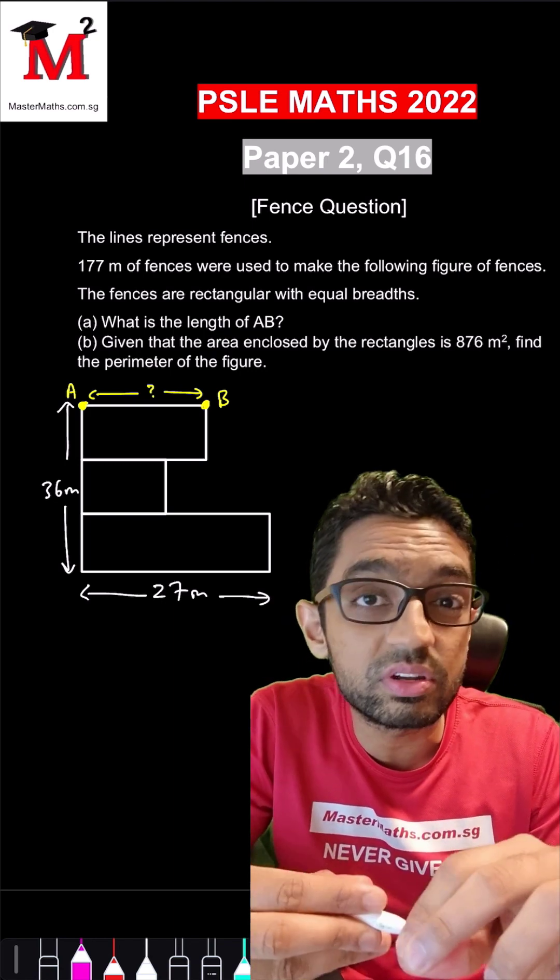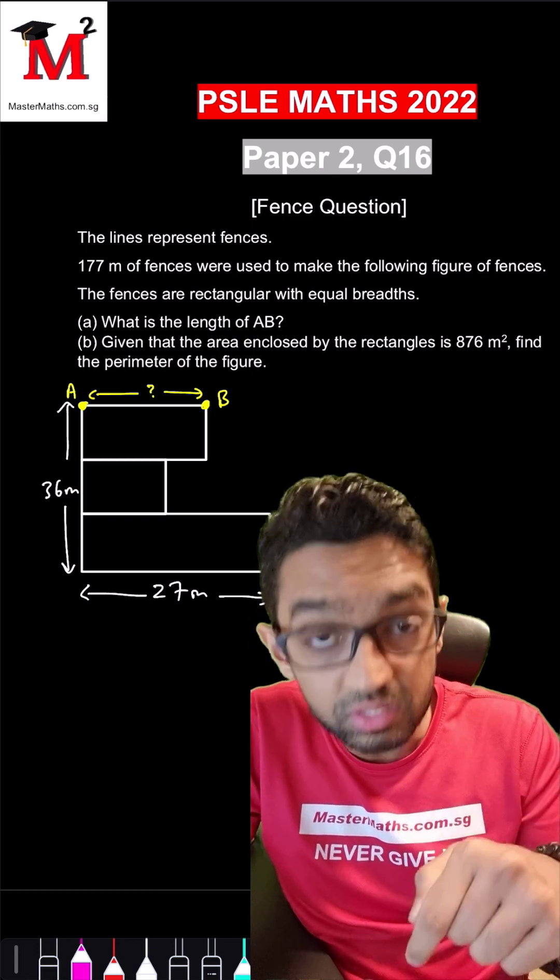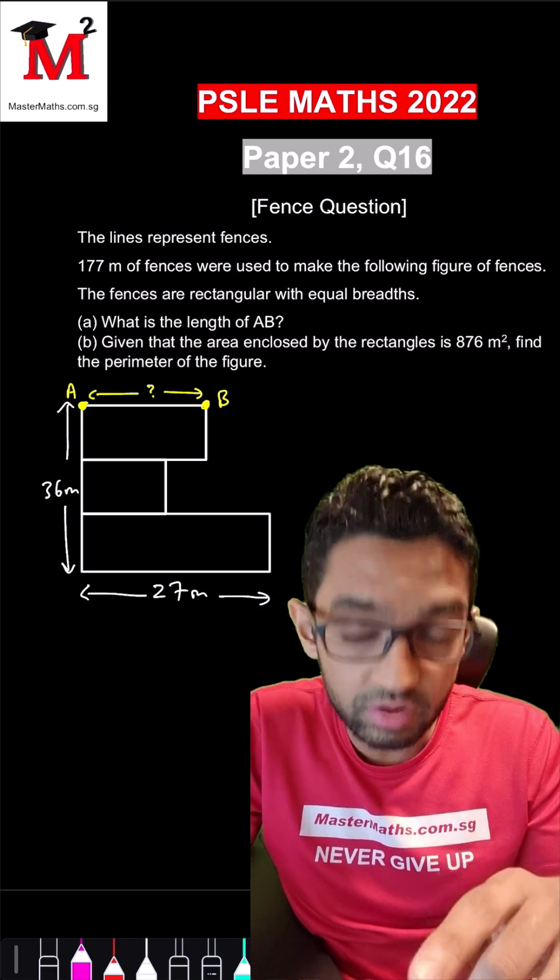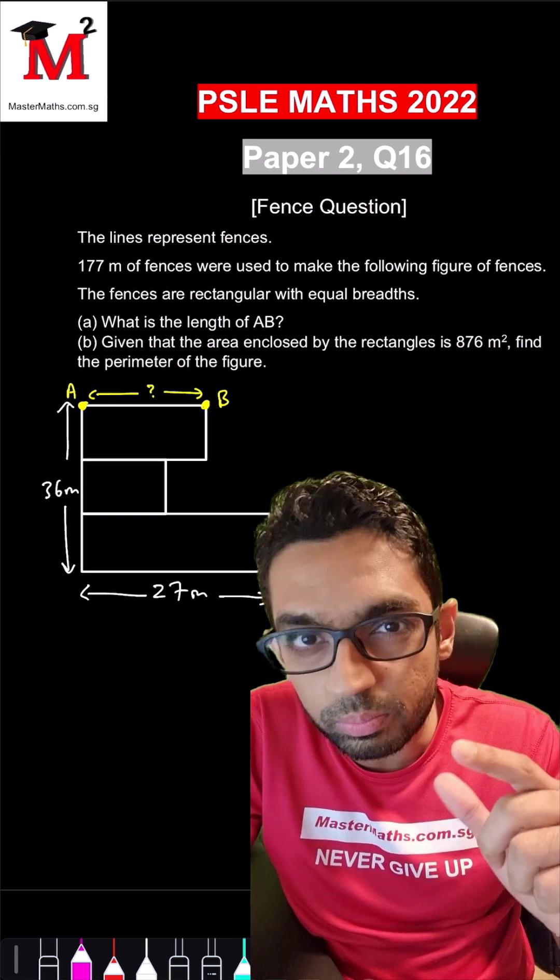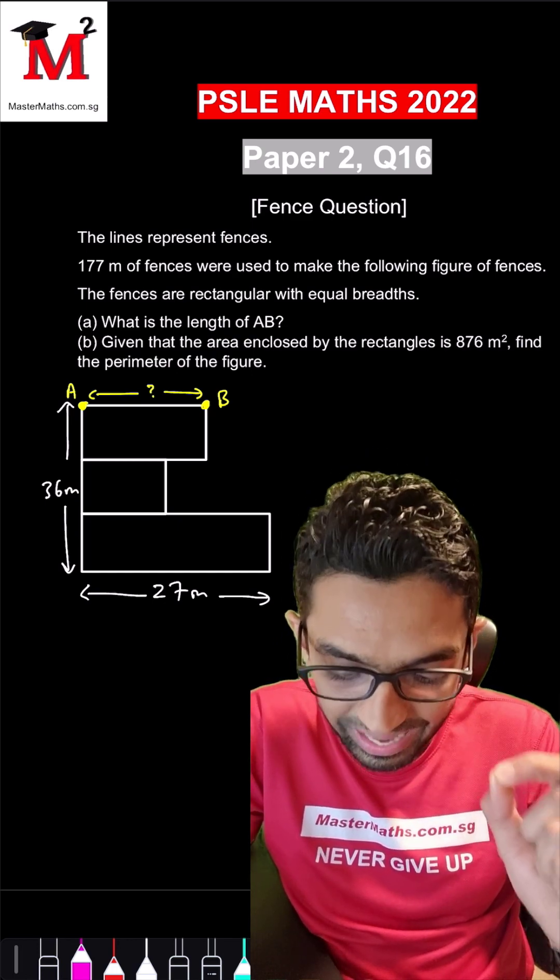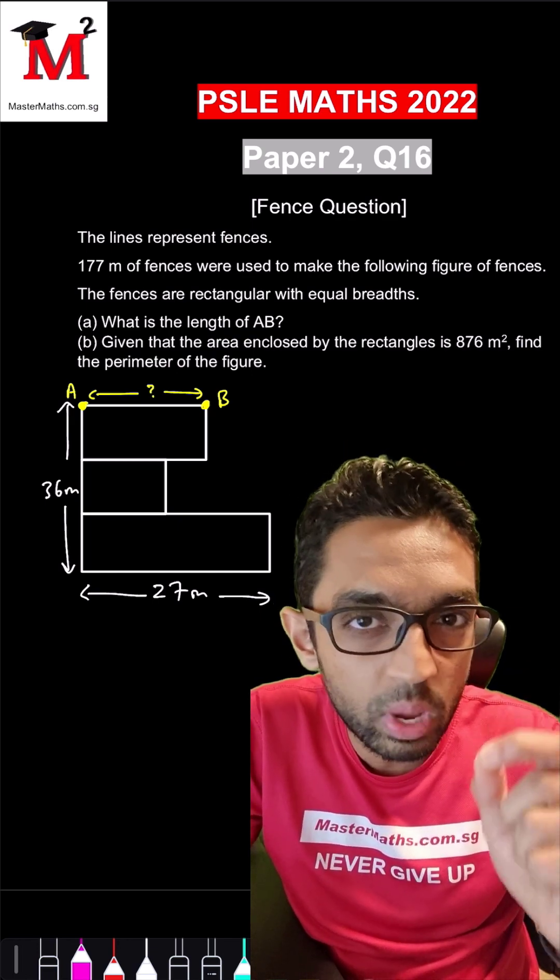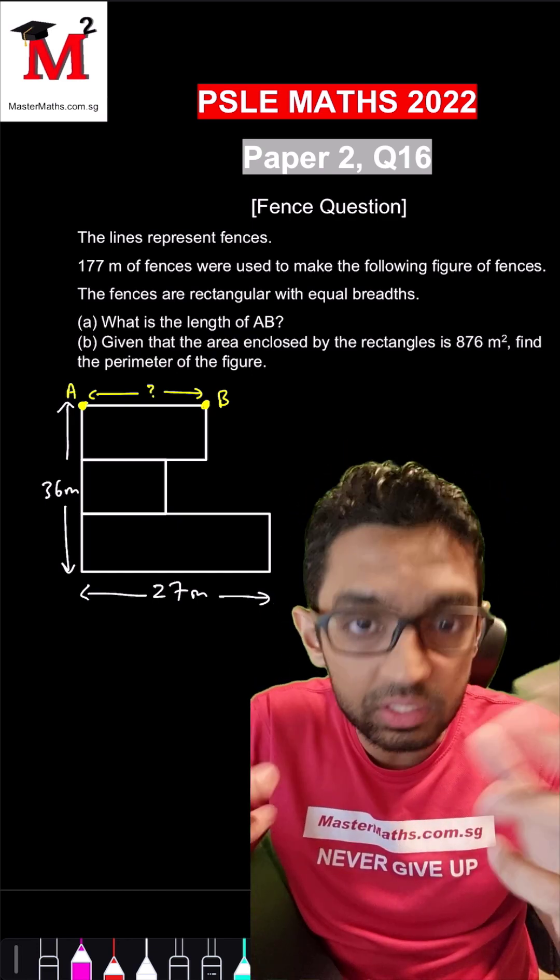The lines represent fences. 177 meters of fences were used to make the following figure of fences. The fences are rectangular in shape with equal breadth. Part A, what is the length of AB? Part B, given that the area enclosed by the rectangles is 876 square meters, find the perimeter of this figure.